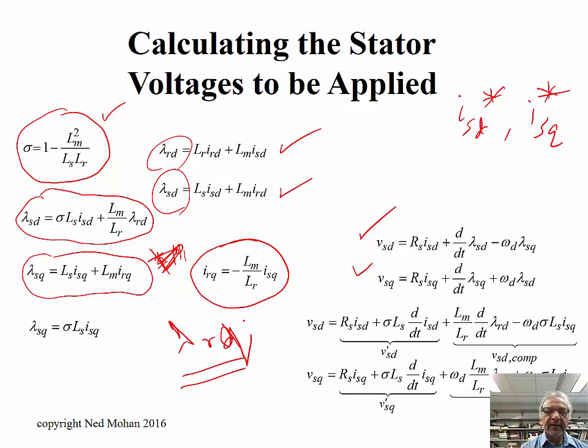Lambda SQ is not 0. But using lambda RQ equal to 0, we come up with this equation here. IRQ as a function of ISQ, and if you substitute for IRQ over here, we come up with lambda SQ here.